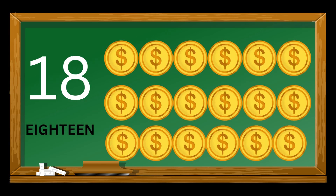E-I-G-H-T-E-E-N. 18. Can we count these coins? 1, 2, 3, 4, 5, 6, 7, 8, 9, 10, 11, 12, 13, 14, 15, 16, 17, 18. These are 18 coins.